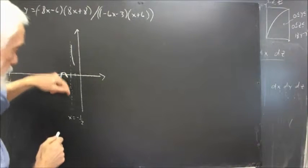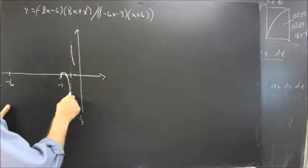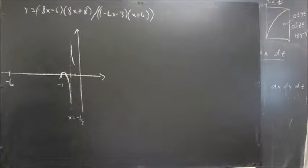The graph turns here, and then it can just turn on, down, and approach this negative asymptote.